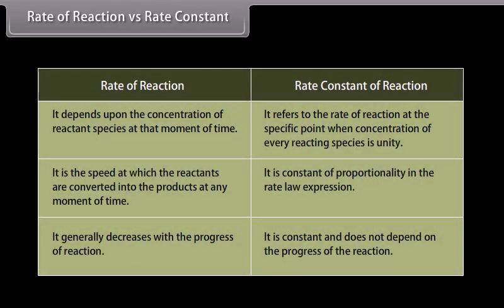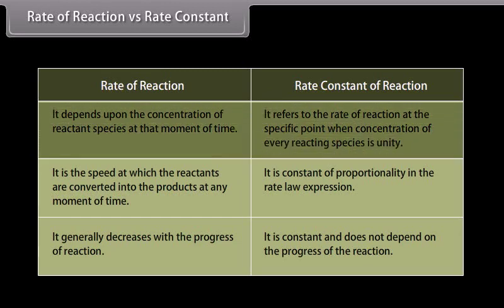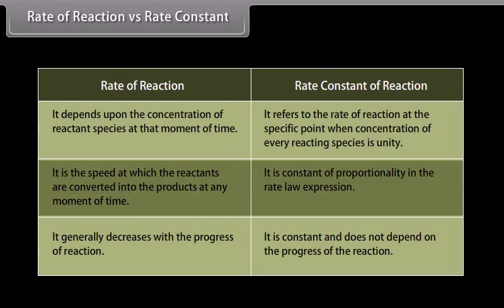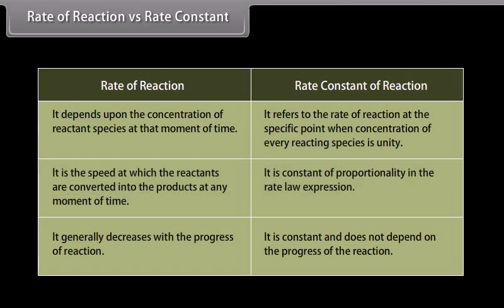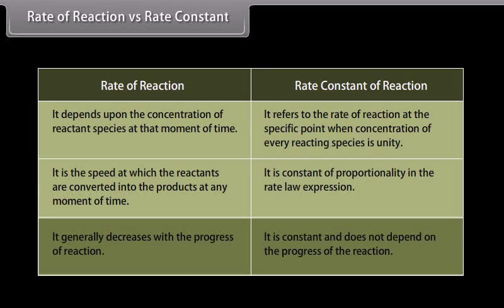The important differences between rate of reaction and rate constant: rate of reaction depends upon the concentration of reactant species at that moment, while rate constant refers to the rate when concentration of every reacting species is unity. Rate of reaction is the speed at which reactants are converted into products at any moment, while rate constant is the constant of proportionality in the rate law expression. Rate of reaction generally decreases with progress of reaction, whereas rate constant does not depend on the progress of the reaction.